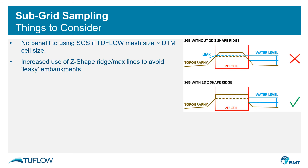Secondly, subgrid sampling isn't a grid within the cell — it just parameterizes the underlying topography. As such, subgrid sampling does not know if the higher elevations within the cell form a barrier to flow traveling between one side of the cell to the other. Therefore for embankments and other barriers to flow, you would want to ensure the embankment ridge is being picked up by using Z-shape ridge max lines to avoid leaky embankments. Tools will be added in the next release of TwoFlow to help identify where these leaky embankments may occur.